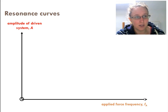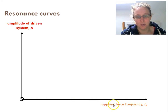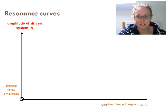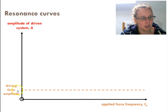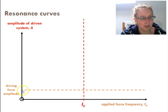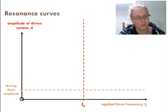Let's look at some resonance curves. This is a graph of the amplitude of the system against the applied frequency — that is, how often the force is applied, not how big the force is. The dotted line shows the amplitude of the driving force, and the second dotted line shows the natural frequency.